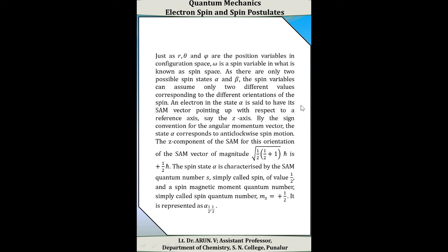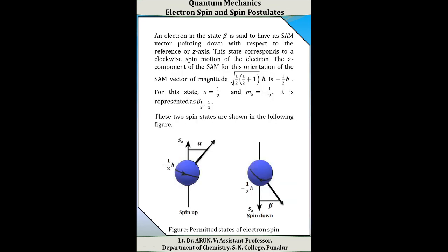An electron in state beta has its spin angular momentum vector pointing down with respect to the reference z-axis, corresponding to clockwise motion. The z-component for this orientation has magnitude −1/2 × h-cross. For this state, s = 1/2 and m_s = −1/2, represented as beta(1/2, −1/2). The two spin states are shown in a figure: spin-up for alpha (anti-clockwise direction) and spin-down for beta (clockwise direction).